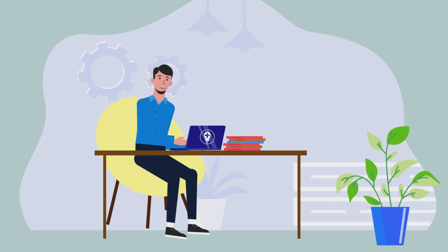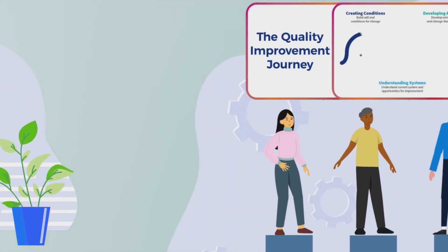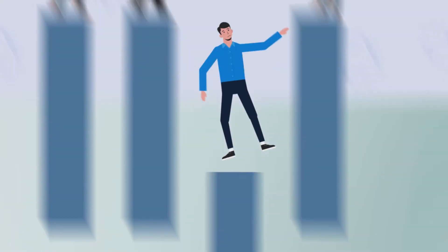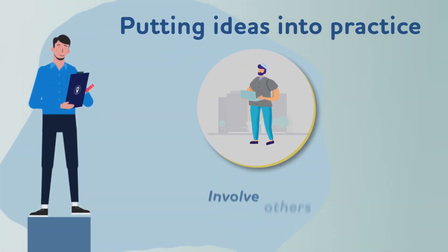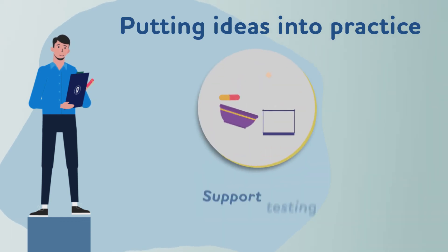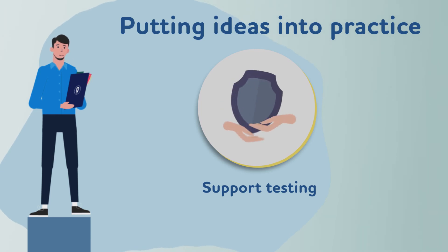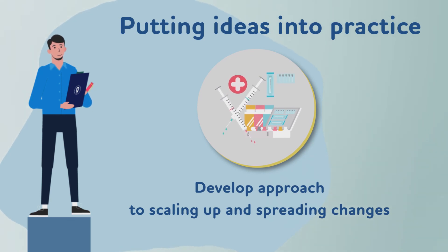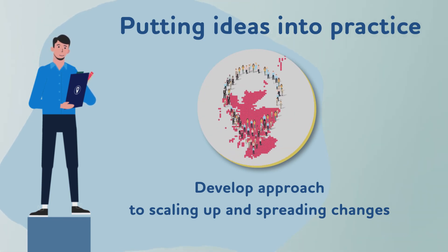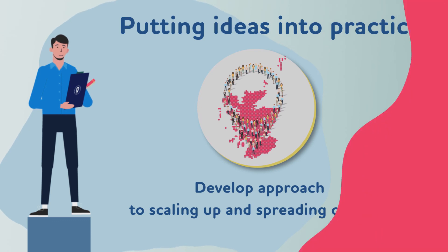But new ideas need to be tested in the real world. Doing this can be a bit daunting and sometimes challenging. So it's important to develop the skills and knowledge required to make lasting improvements. These include making sure you involve others. Doing improvement is a team sport. Using techniques designed to support rapid cycles of testing, so we can tell quickly if our ideas really work. Developing a systematic approach to scaling up and spreading changes where relevant. Making sure the improvement reaches everyone who can benefit from it.